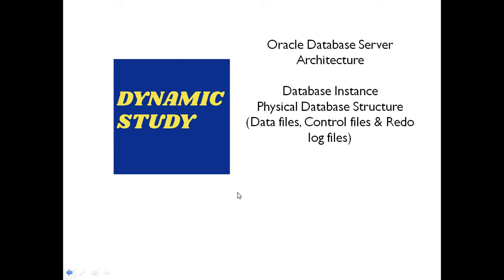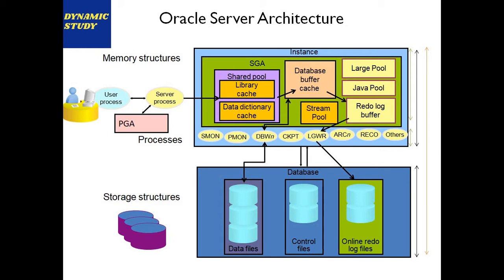Oracle Database Server Architecture is a combination of two parts: one is the instance and second is the physical database. The instance is a part of the running Oracle database server which is available on the server RAM. The physical database is the part which is actually available on the hard drive — on storage.